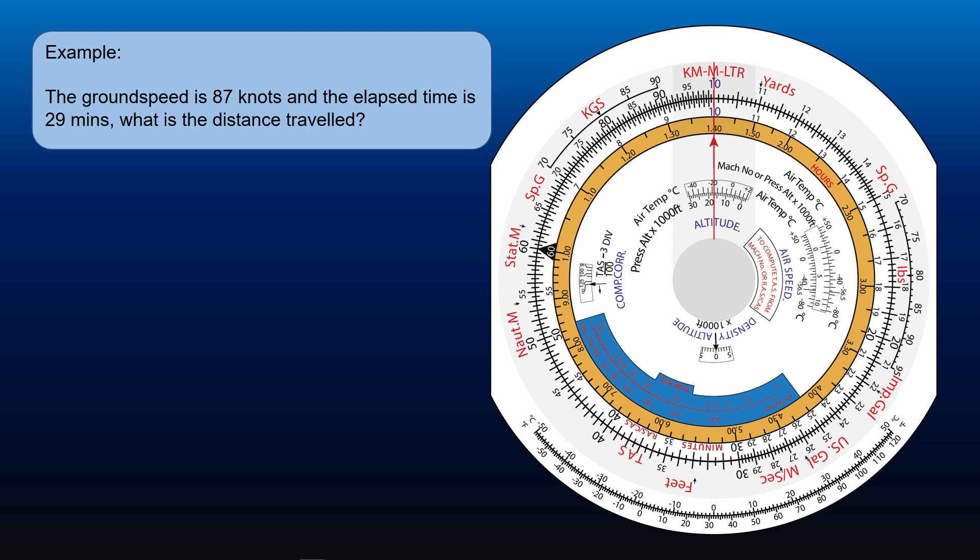Our first step, as usual, is to approximate the answer. 29 minutes is approximately half an hour. With a speed of 87 knots, our answer should be slightly less than half of 87 nautical miles.